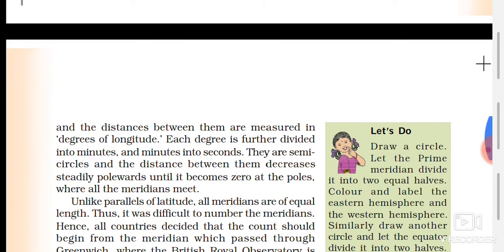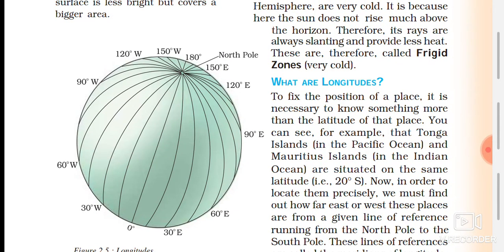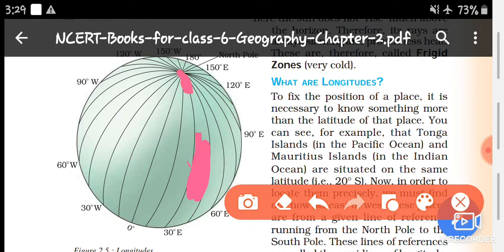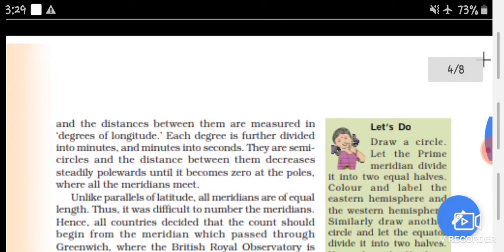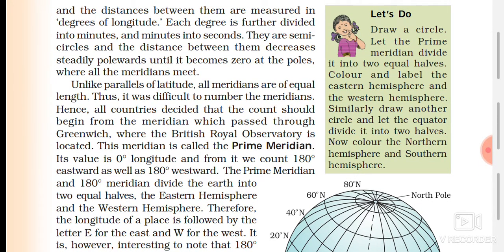The distance between meridians is measured in degrees of longitude. Each degree is further divided into minutes, and minutes into seconds. They are semicircles and the distance between them decreases steadily towards the poles until it becomes zero. The difference between two longitudes is greater at the equator and subsequently decreases near the poles.